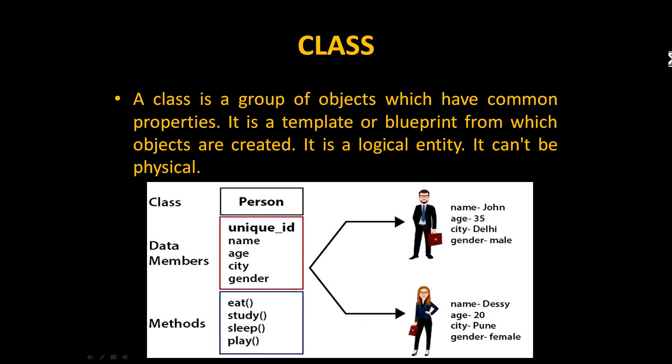A class is a logical entity — it cannot be physical. You can consider a class as a person, and that person will have certain attributes. A person can be identified by a unique ID. There may be many persons with the name John or Desi, so a person can be identified based upon a unique ID.